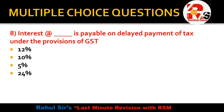Interest at the rate of __ percent is payable on delayed payment of tax under GST provisions. If you don't pay GST on a timely basis, interest penalty will be levied. The options are 12%, 10%, 5%, or 24%. This is a very important MCQ. The answer is 24% — if you don't pay GST on time, 24% interest will be charged.